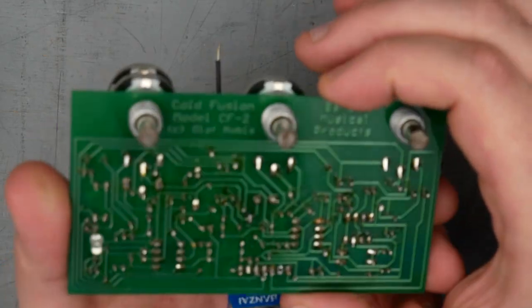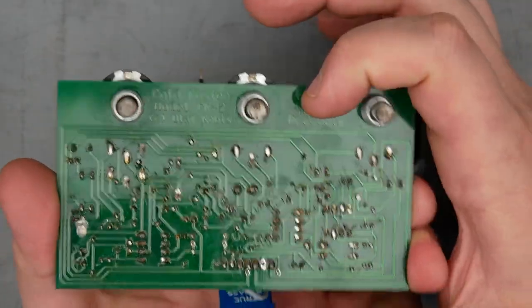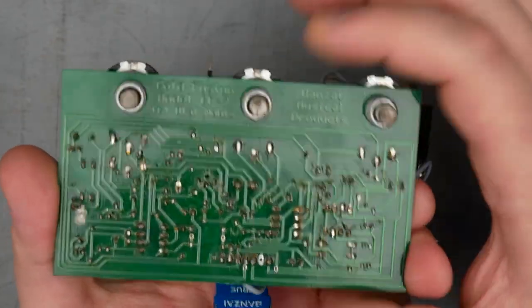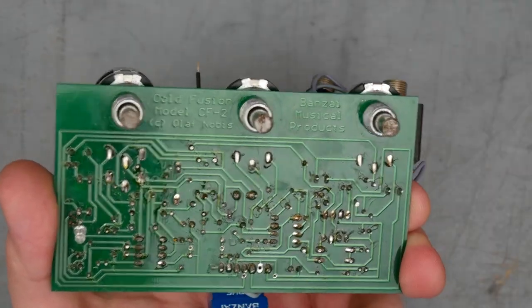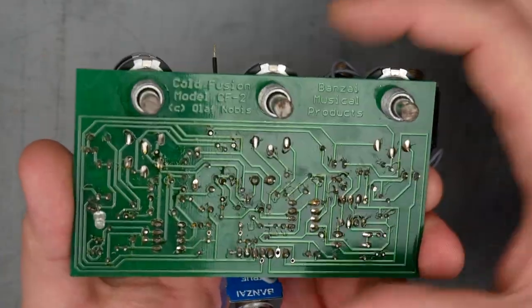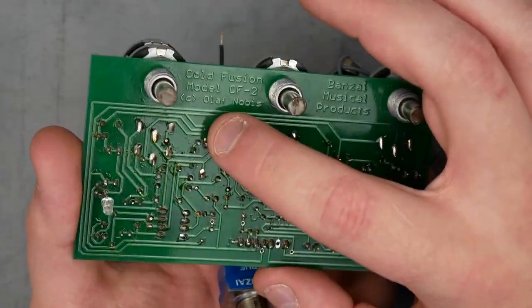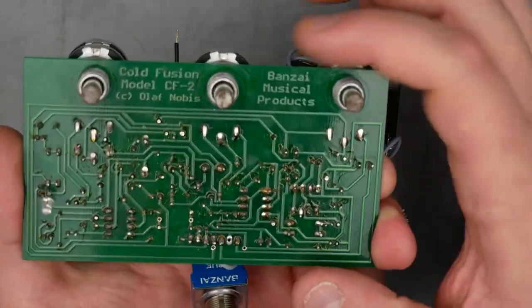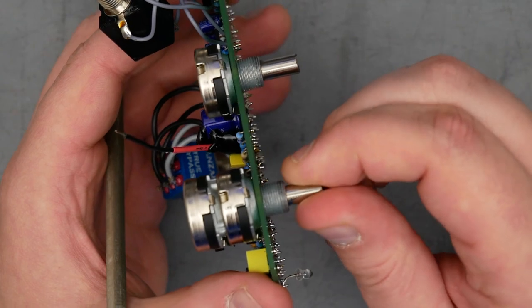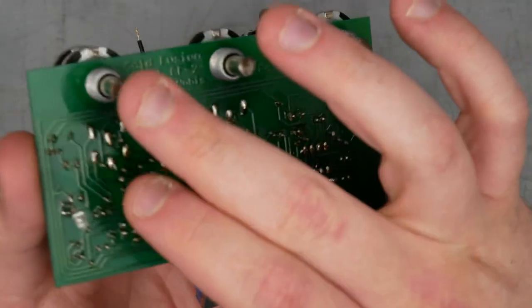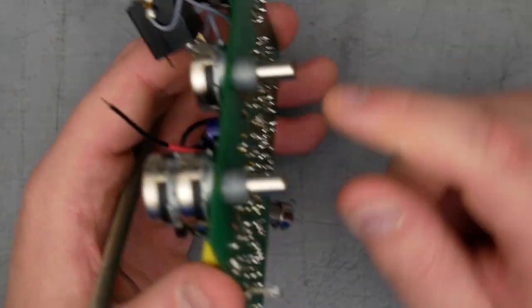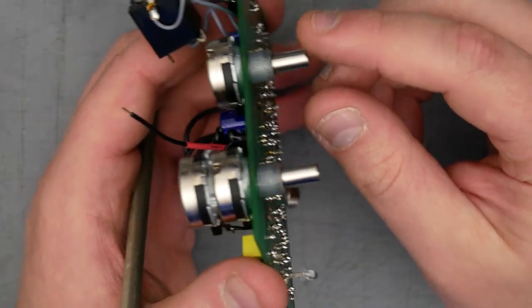Flip the other side of the board. We've got the information here written into the design of the board and then under the solder mask. ColdFusion model CF2. There was a model CF1. I'm not sure how they differ, and I'm not tracing this one out. This was designed apparently by Olaf Nobis and Banzai Musical Products. It appears that the potentiometer shafts here had to be cut down because they are sort of rough. I would hope that that's not the way they came from the Piher factory. I would assume that they're just cut down for use with this pedal.